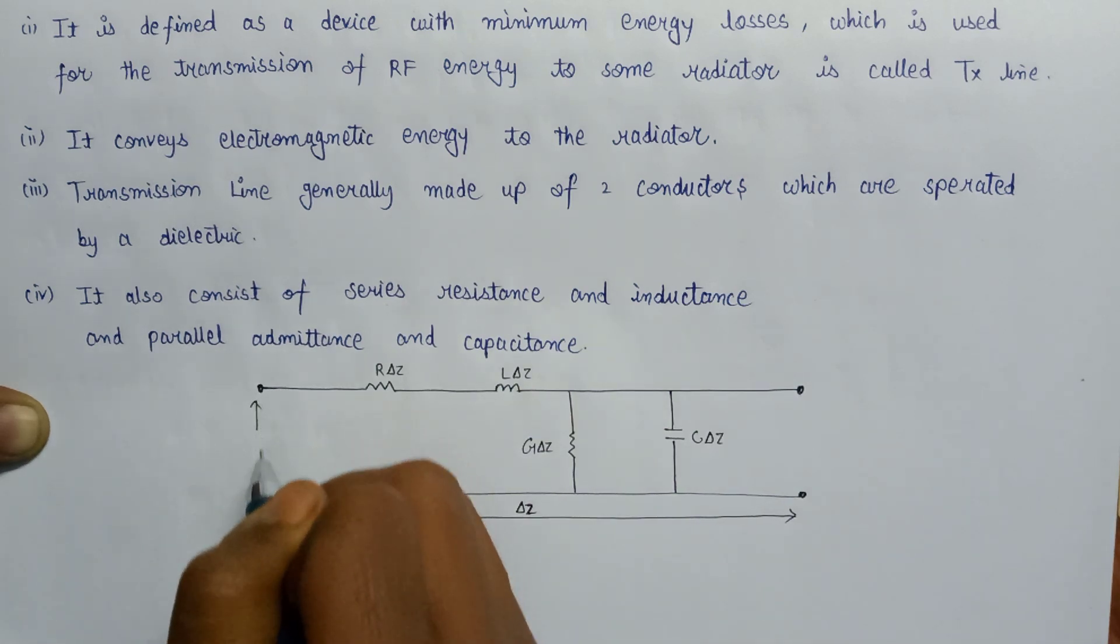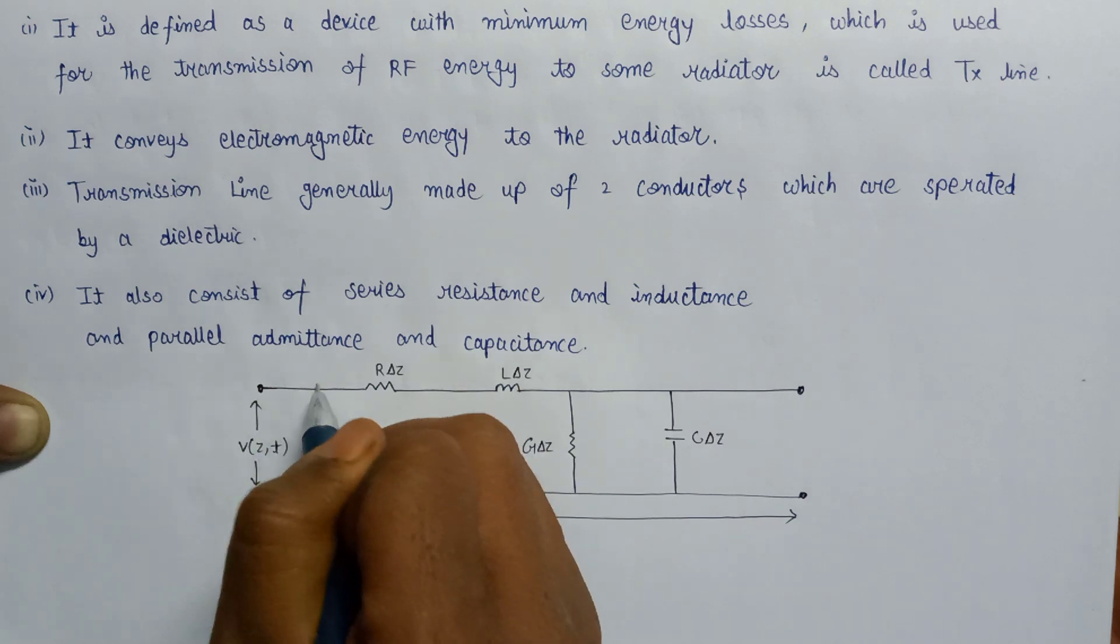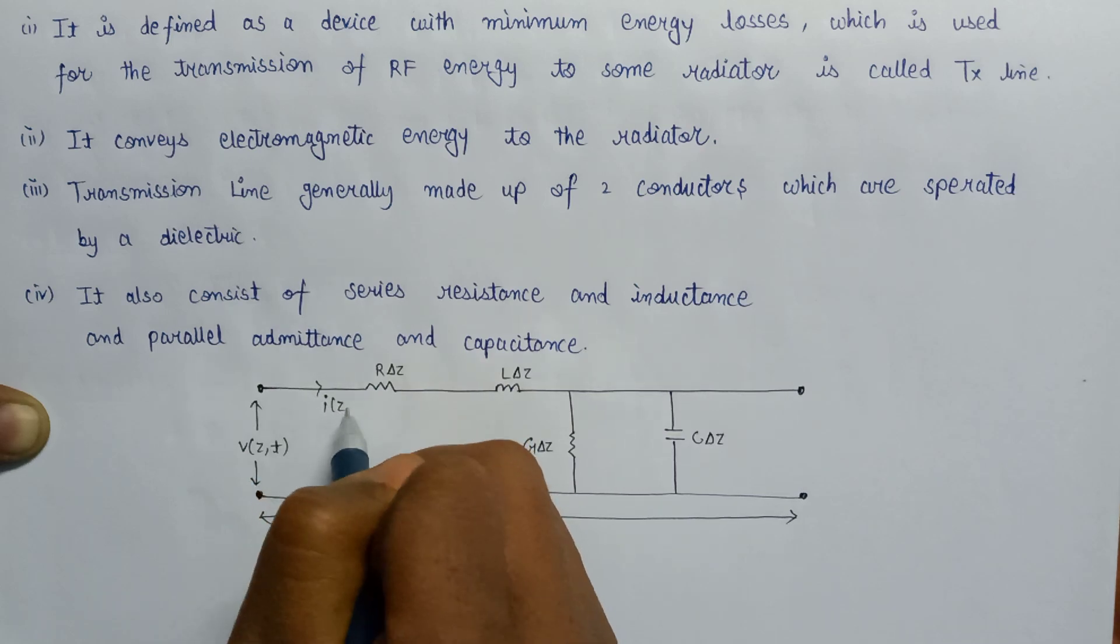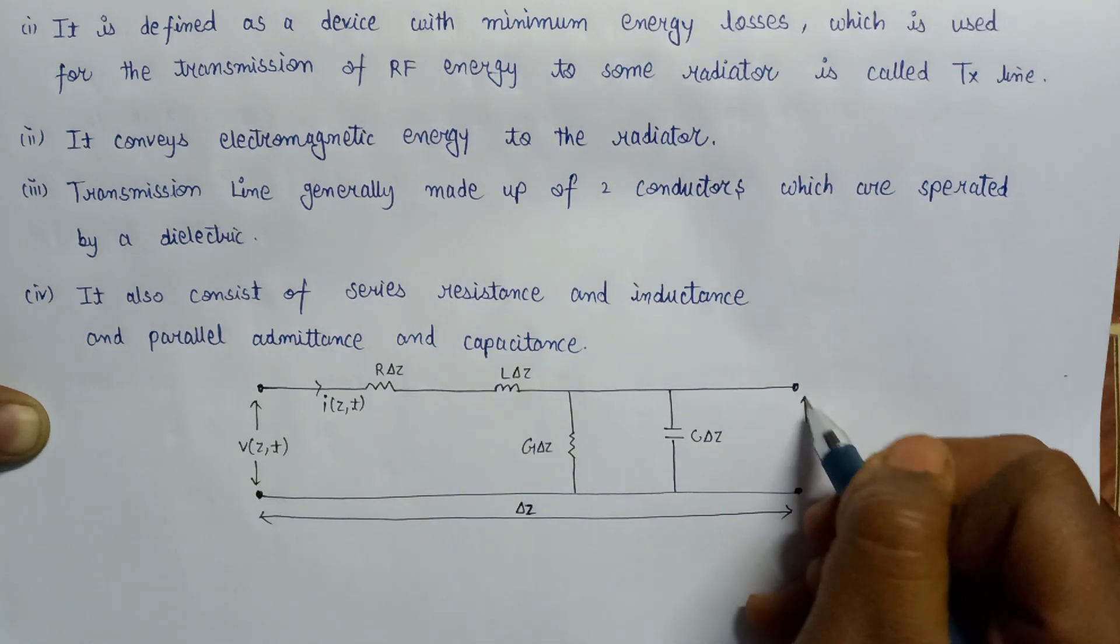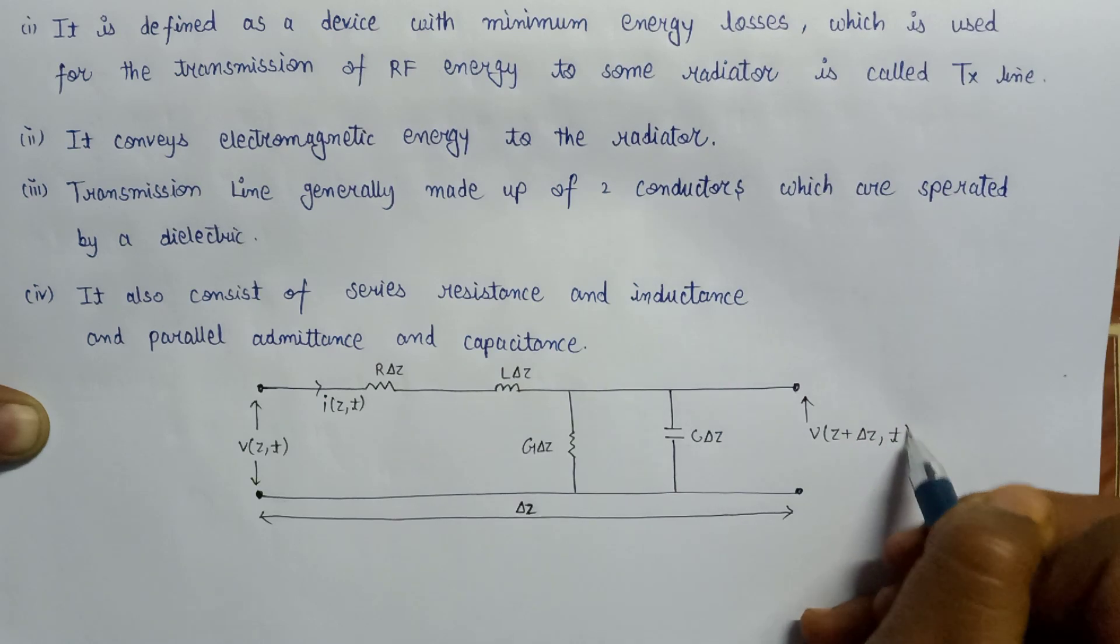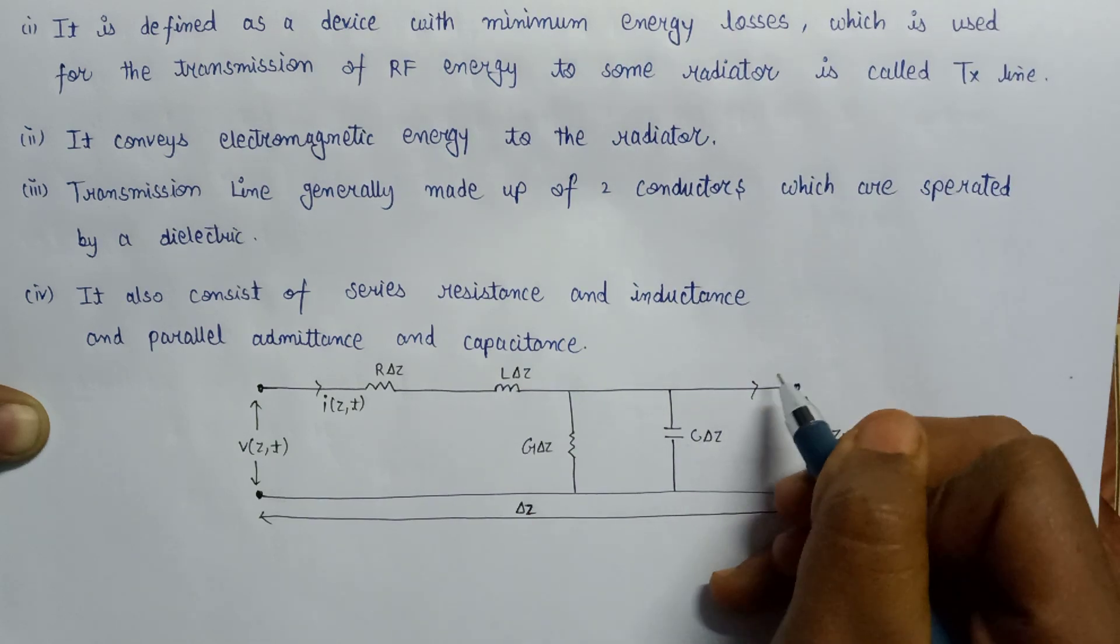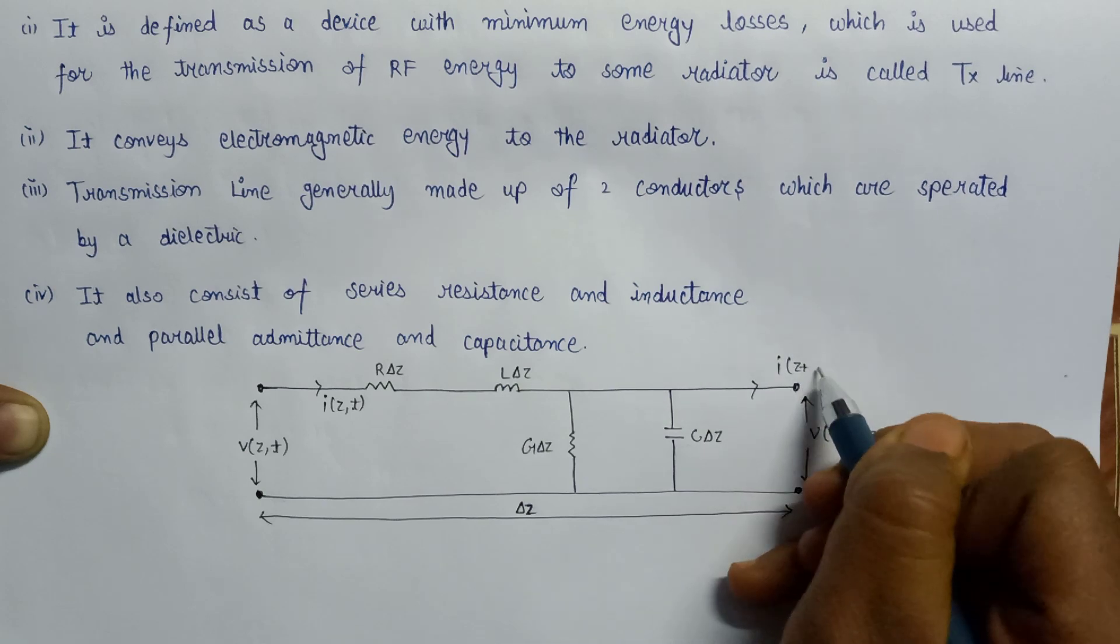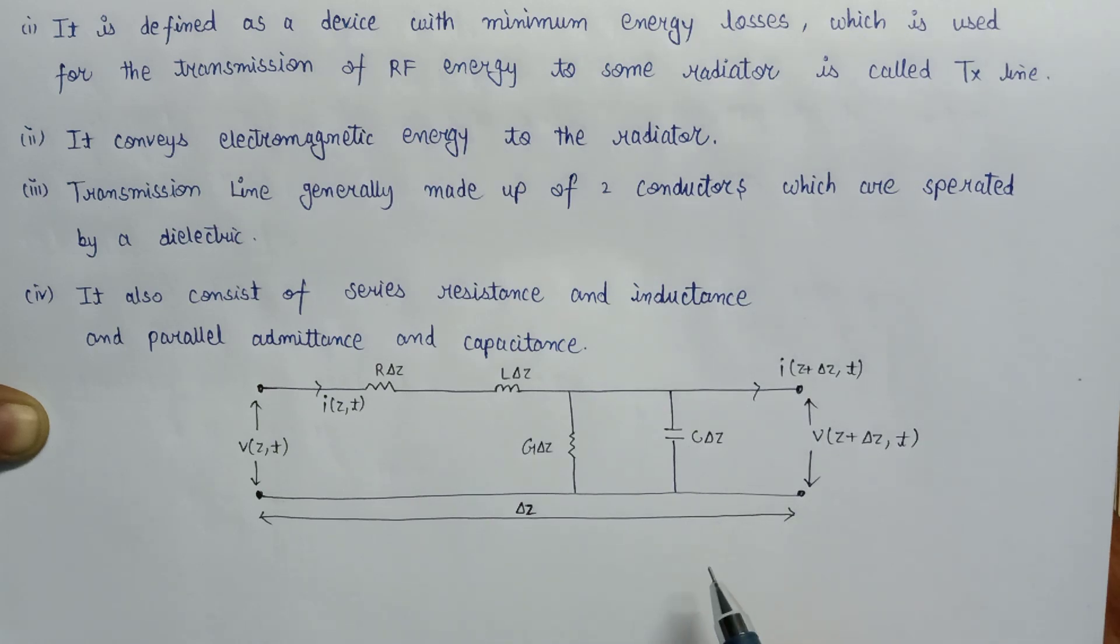Now, at the input side of this transmission line, we apply the voltage V of Z, T. And due to this voltage which is applied at the input side, the current I of Z, T starts to flow. And at the output side, we get our voltage that is V of Z plus del Z comma T, and here is the output current that is I of Z plus del Z comma T. So, this is the basic structure of the transmission line.